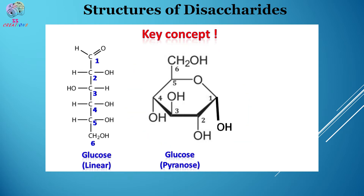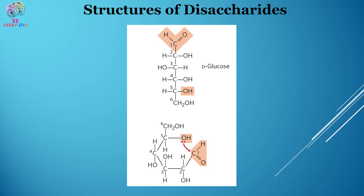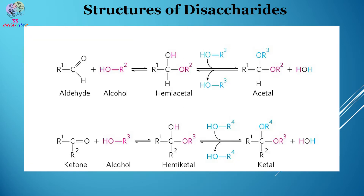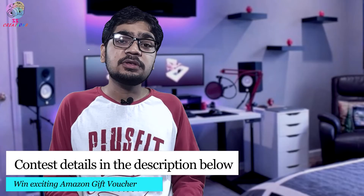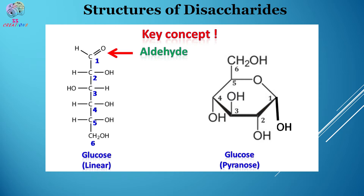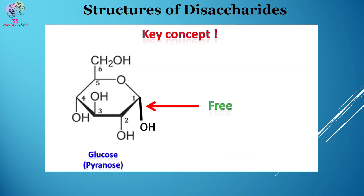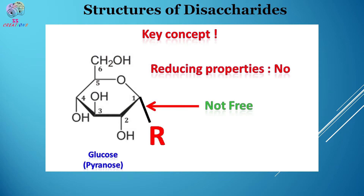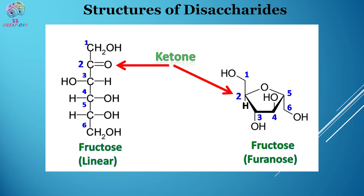The structure of glucose looks like this: a hemiacetal bond formation takes place between the aldehyde carbon-1 and the hydroxyl group of carbon-5 of linear glucose, thereby forming a closed structure called the pyranose structure. Both of these structures are in equilibrium with each other. Have you ever thought why glucose forms a hemiacetal bond and changes its structure from linear to pyranose ring? As you can see, the aldehyde group of glucose is free, thus it possesses reducing property. If this bond is not free, then the disaccharide is non-reducing. Similarly, the ketone group of fructose must be free for it to show reducing property.